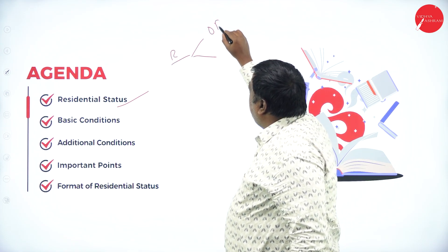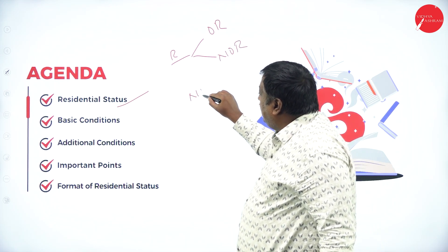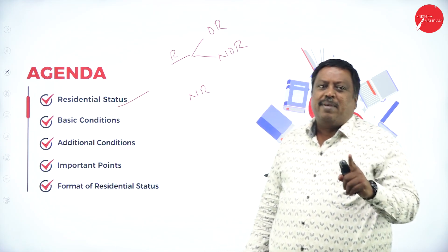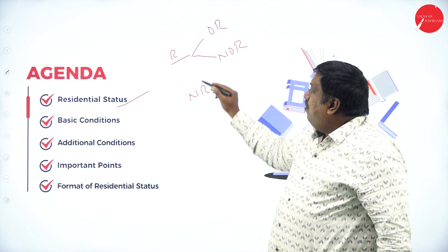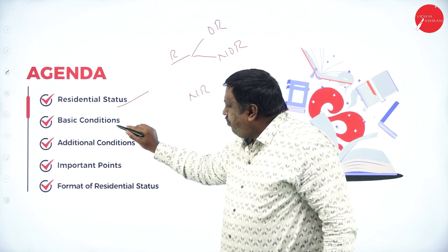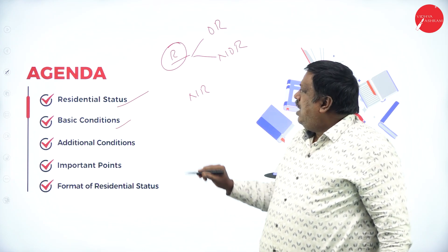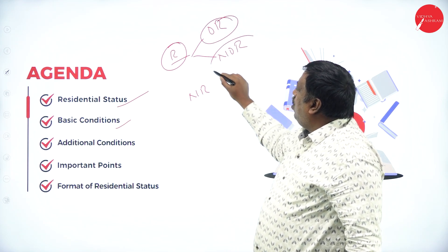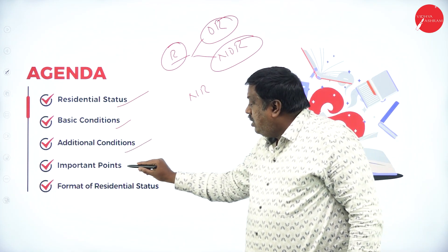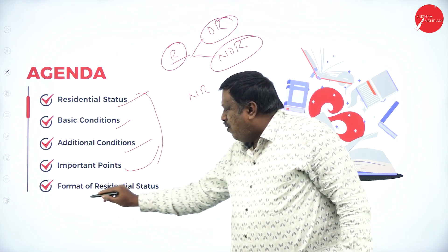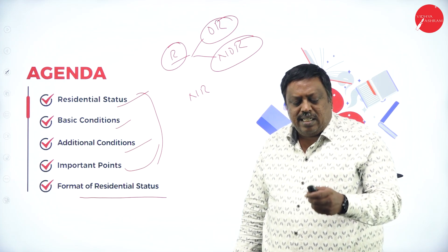For the purpose of paying tax, we determine whether an individual is a resident, ordinary resident, not ordinary resident, or non-resident. We are going to check residential status of an individual, what the basic conditions are, what the additional conditions are, and what are the important points related to the residential status format. These are the topics we are going to discuss in this session.